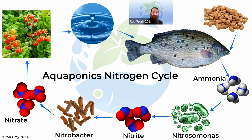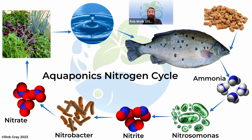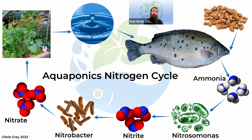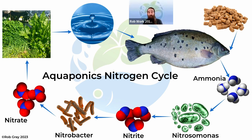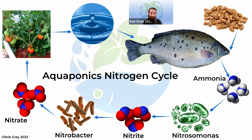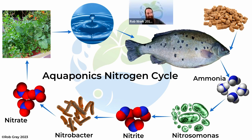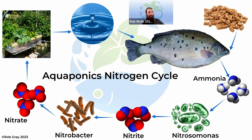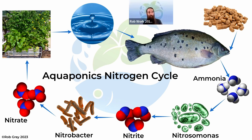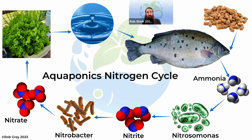The cycle is pretty basic. You have some fish food — you feed that to the fish. The protein within that food is converted into waste ammonia and ammonium, which is excreted out of the fish's gills, and then the bacteria get to work. Nitrosomonas and other bacteria convert it to nitrite, and then the nitrobacter and other bacteria convert it into nitrate, which is available to the plants.